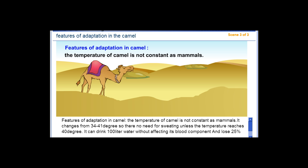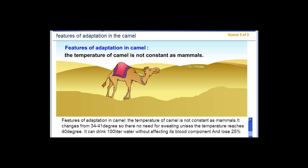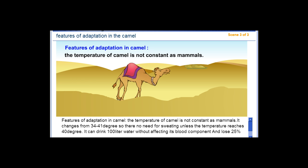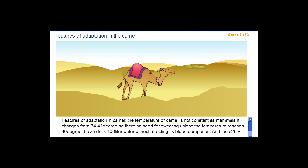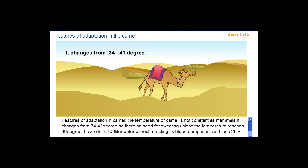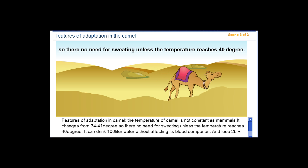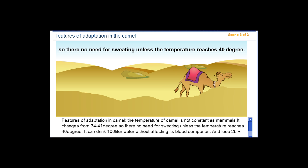The temperature of the camel is not constant as in other mammals. It changes from 34 to 41 degrees. So there is no need for sweating unless the temperature reaches 40 degrees.